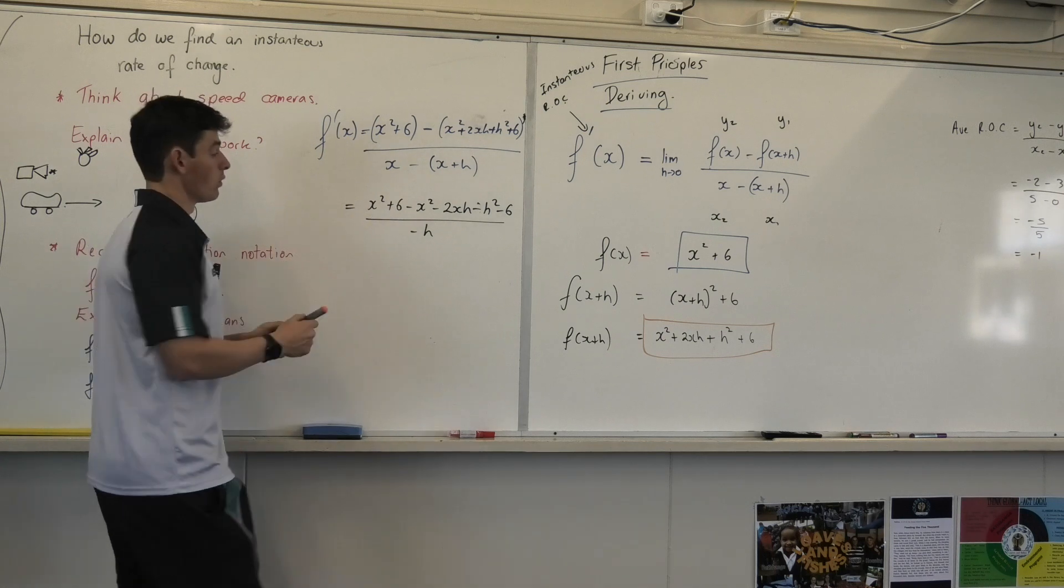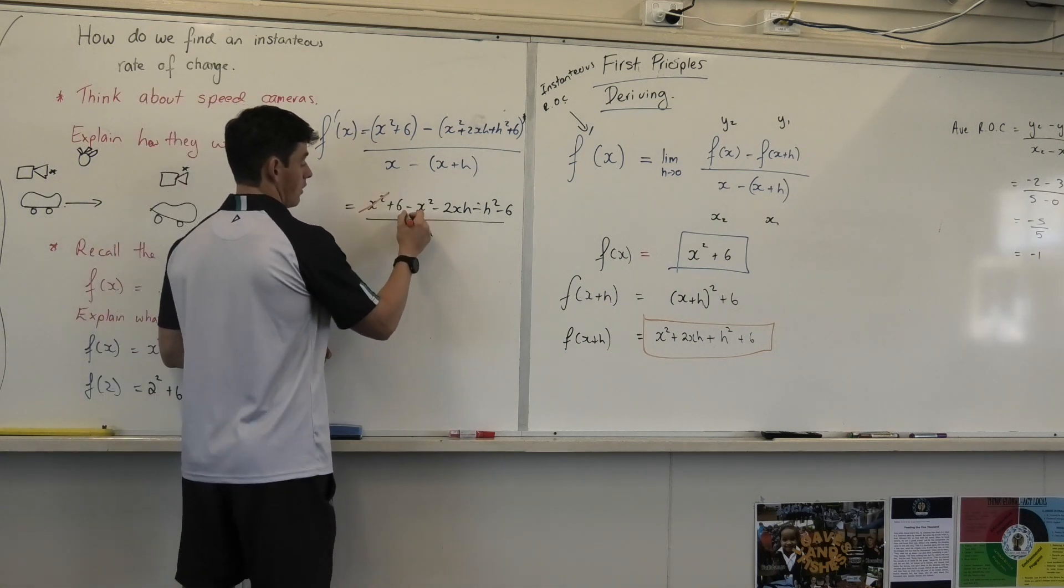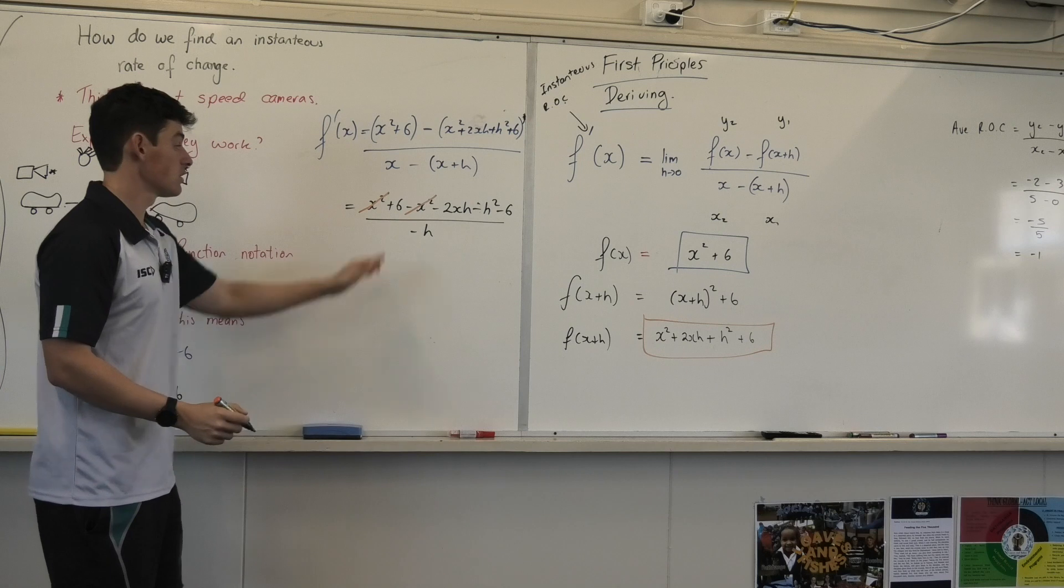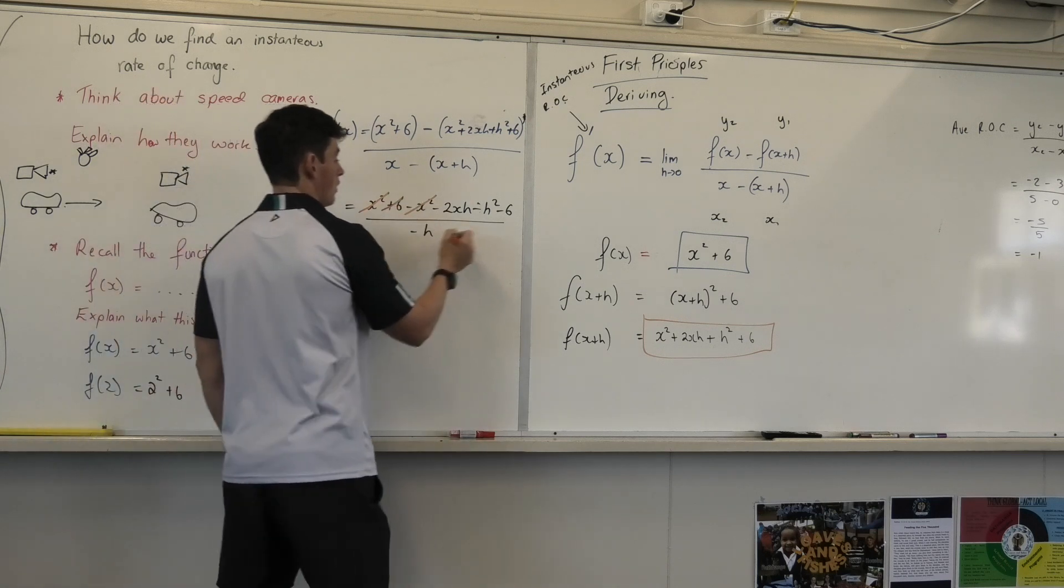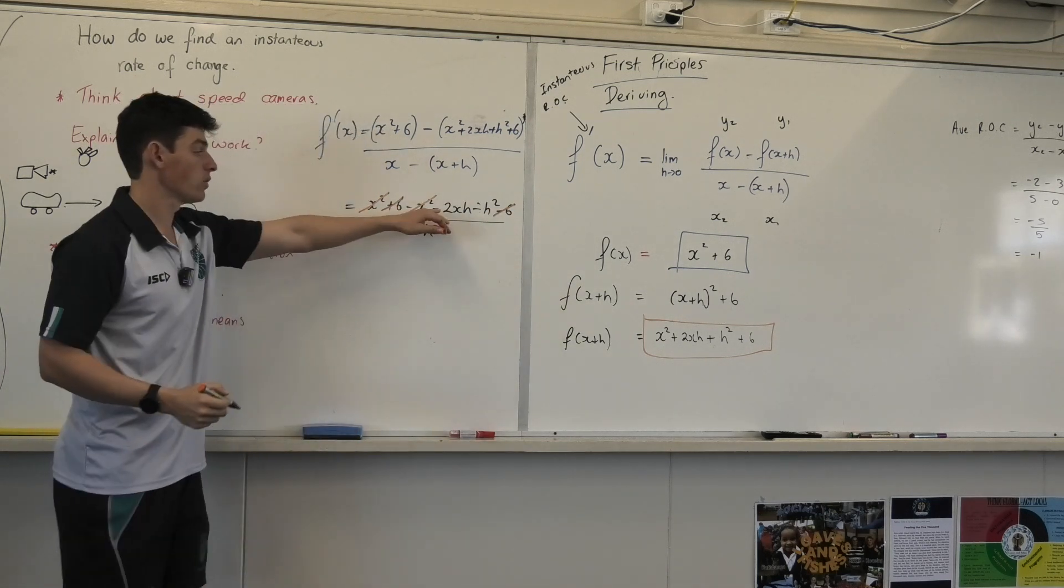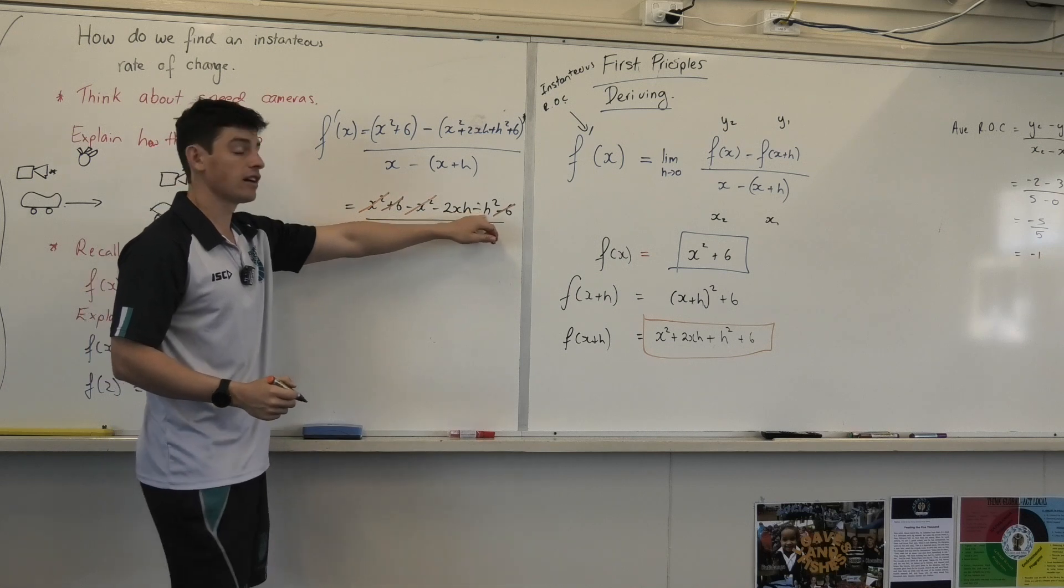Can I cancel this x squared? Yes. With what? That one there, correct? Can I cancel the 6? Yes. With the other one there. Can I cancel the 2xh for that number? Can I cancel h squared for that number?